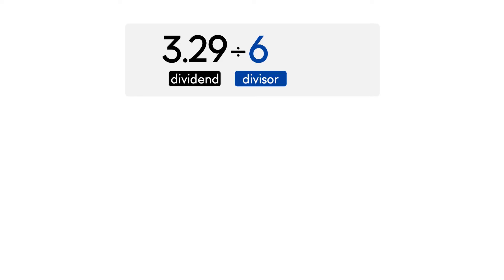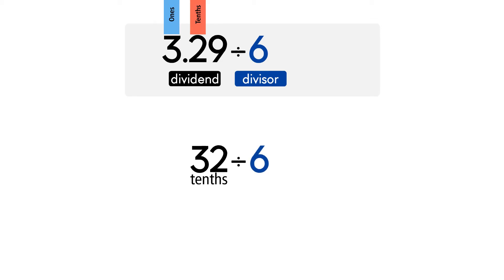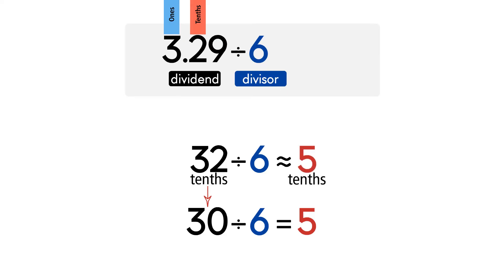Let's try another example: 3.29 divided by 6. In this example the dividend is smaller than the divisor. We need to rename the decimal dividend as tenths or hundredths first. Instead of saying 3 ones and 2 tenths, we can say we have 32 tenths. We write 32 tenths divided by 6. The compatible number is 30. We divide 30 by 6 and we get 5, so 32 tenths divided by 6 is approximately 5 tenths. To write the final answer, we put a 0 in the ones place, then write the decimal point and put a 5 in the tenths place. So the final answer is approximately 0.5.